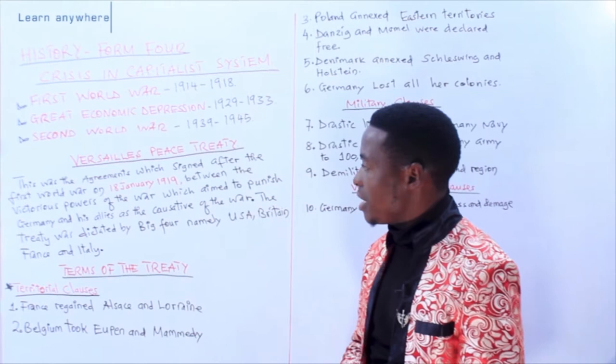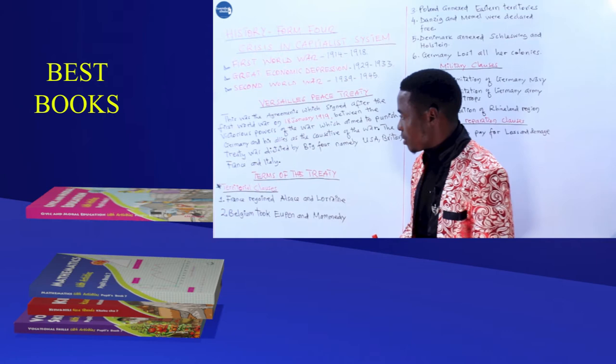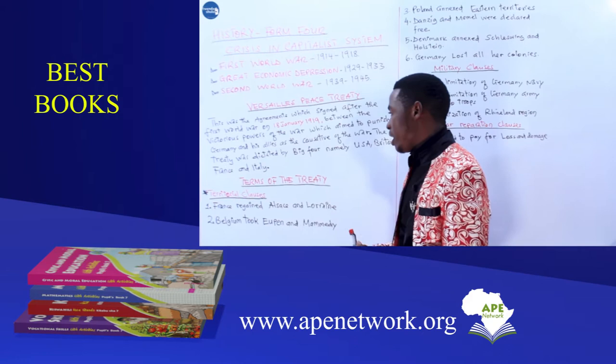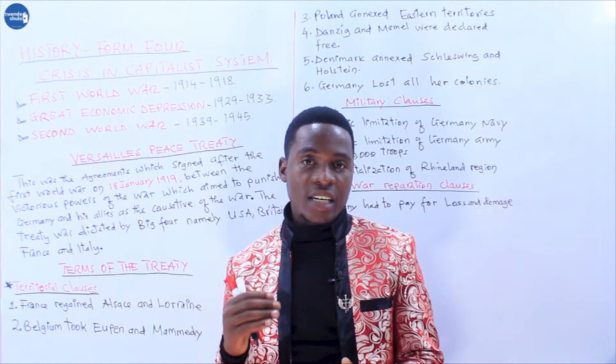We may define the Versailles Peace Treaty as the agreement which was signed after the First World War. The agreement was signed on 18th of January 1919 between the victorious powers of the war, which aimed to punish Germany and its allies as the instigators of the war. We remember that after the First World War, the Triple Entente were the victors.